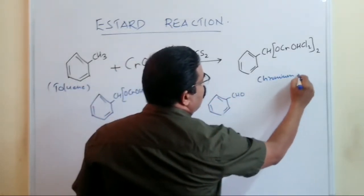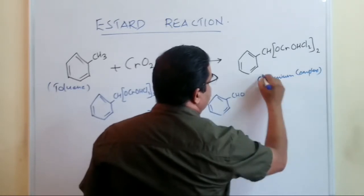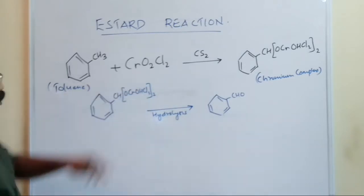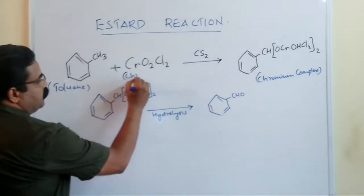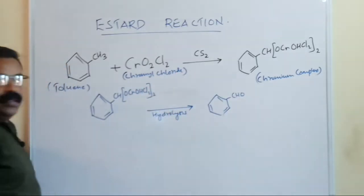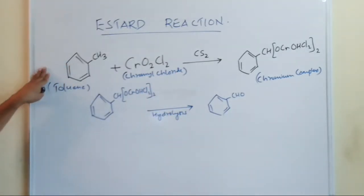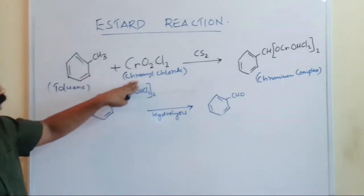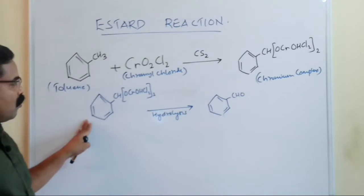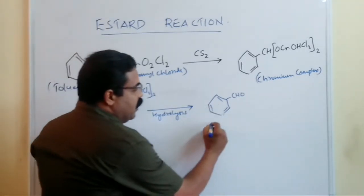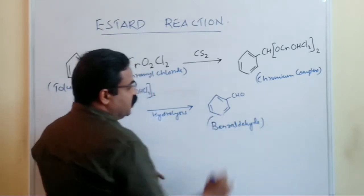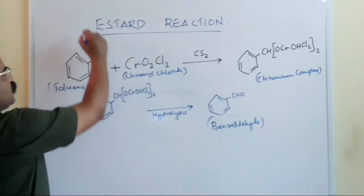So toluene reacts with chromium chloride to give a chromium complex. Hydrolysis of that chromium complex gives an aldehyde — this is benzaldehyde. So this reaction is called the Étard reaction.